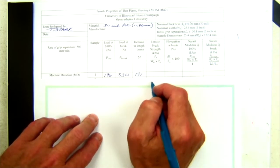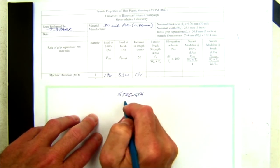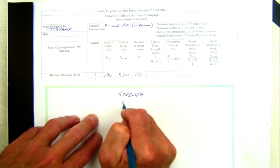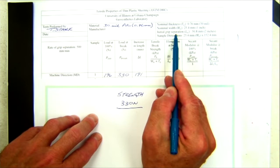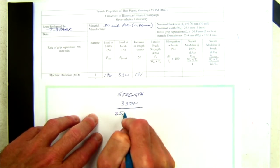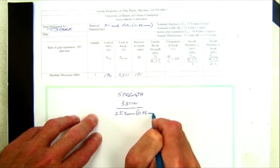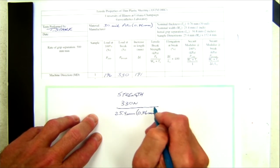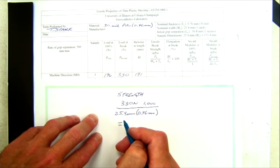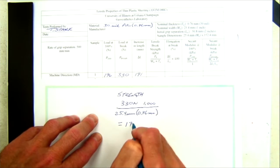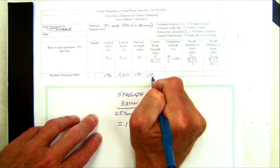The first calculation is tensile break strength. The load at break is 330 Newtons divided by the initial width. The initial specimen dimensions are in the upper right corner of the data sheet: initial width is 25.4 millimeters, initial thickness is 0.76 millimeters. Multiply by 1,000 to get to kPa. The tensile break strength is 17,095 kilonewtons per meter squared, or kPa. That value is entered on the data sheet.